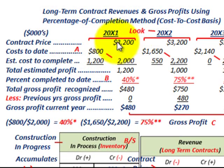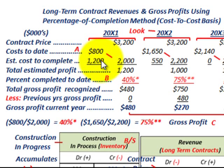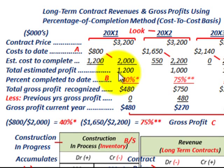We start out with our contract price of $3,200,000 — represented here as 3,200. Our cost-to-date was $800. We estimate the cost to complete the contract at $1,200, so our total estimated cost to complete is $2,000. Comparing that to the contract price of $3,200, the difference gives us a total estimated profit of $1,200.